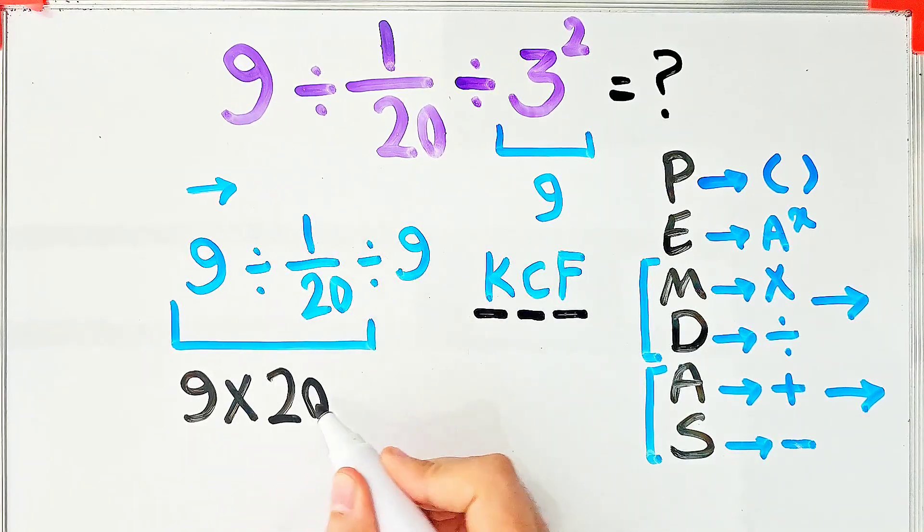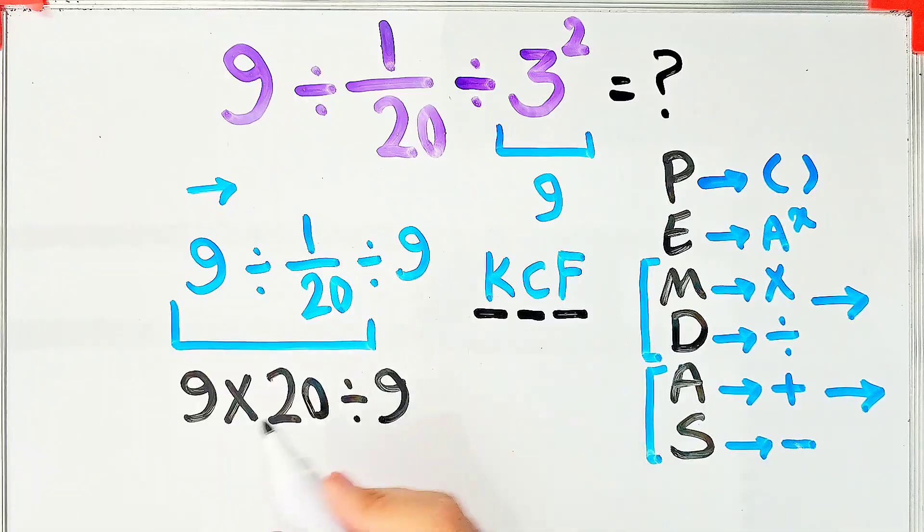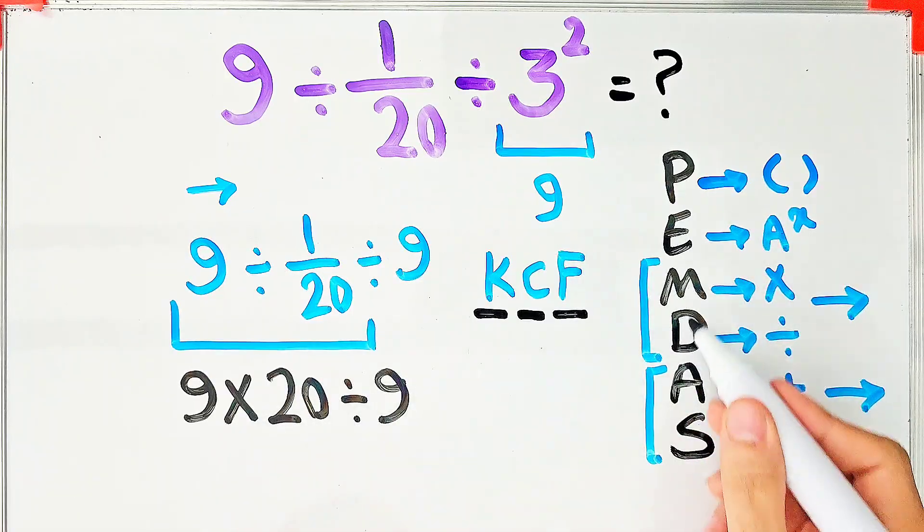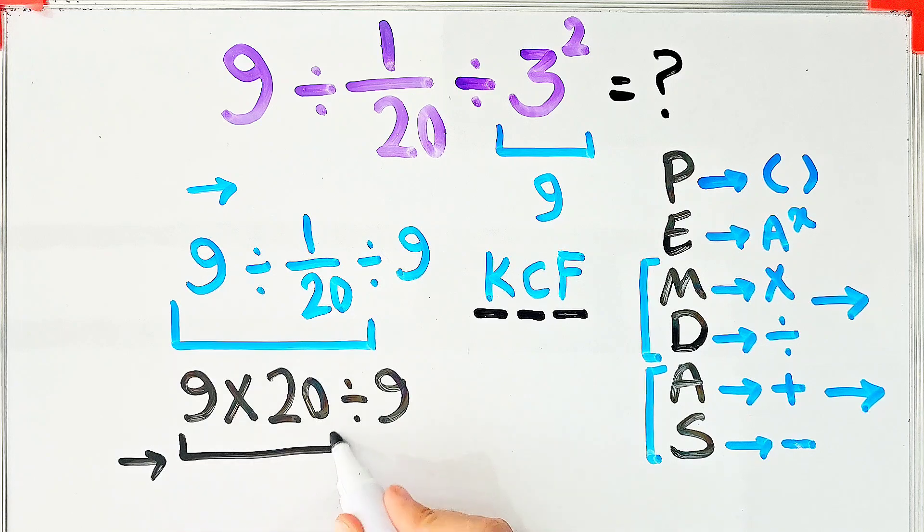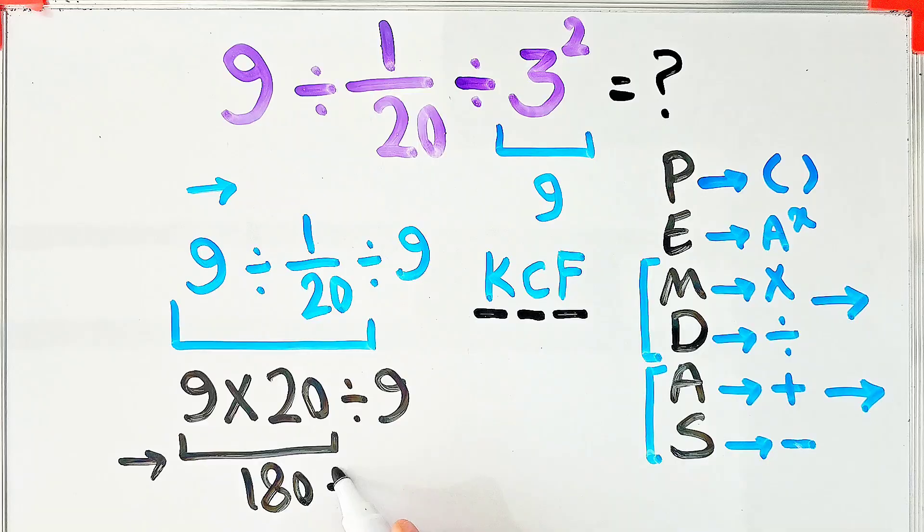Now we have a new expression: 9 times 20 divided by 9. The multiplication and division have the same level of priority, and we start from the left and simplify the question. 9 times 20 equals 180. 180 divided by 9 equals 20, and the final answer is 20.